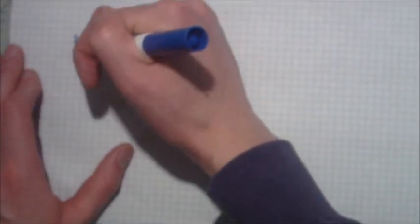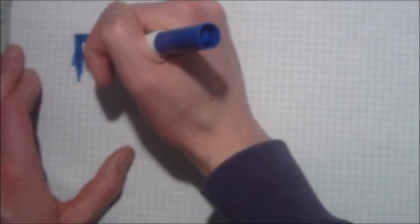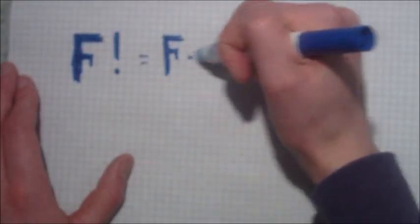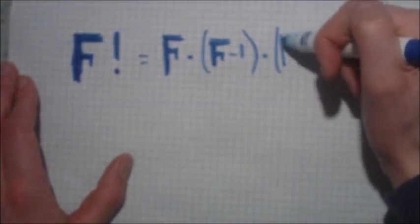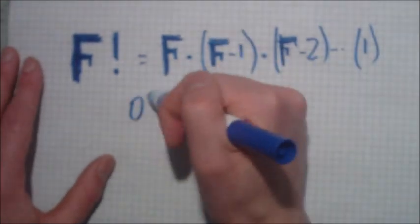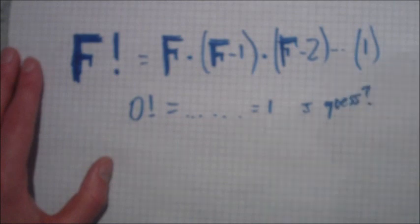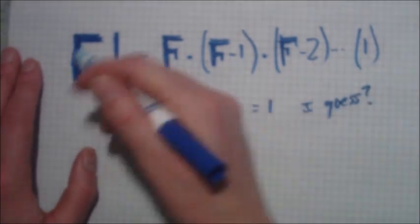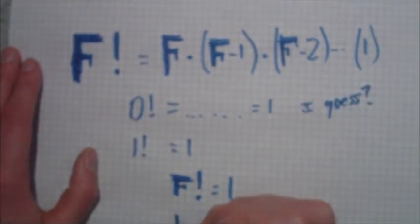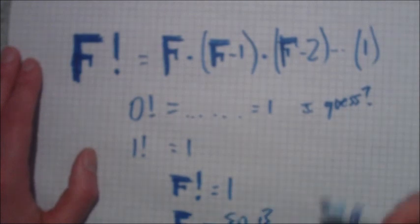Next, let's consider wow factorial. Wow factorial is going to be wow times wow minus one times wow minus two times wow minus three all the way down to one. Zero factorial is going to be one. Someone told me that once, and one factorial of course is going to be one as well. So wow factorial, if that's equal to one, then wow could be either zero or one.